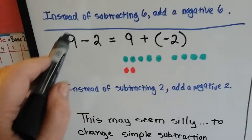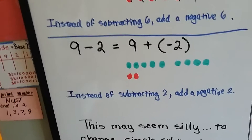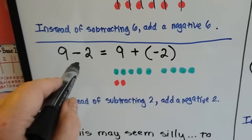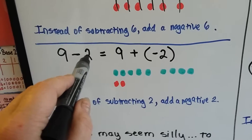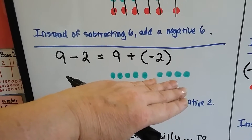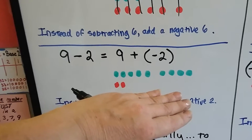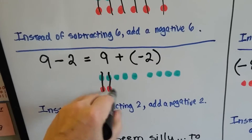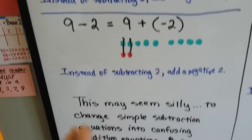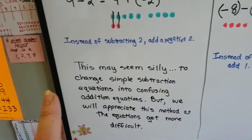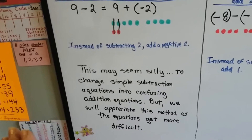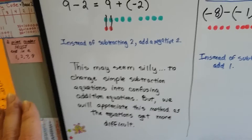One more: 9 minus 2. Let's turn it into an adding-the-opposite type problem. Turn the minus into a plus sign, and the positive 2 becomes a negative 2. So we've got 9 green chips, and we add 2 red negative ones. The zero pairs cancel each other out, and we're left with 7. I know it seems silly to change simple subtraction into addition equations, but we'll appreciate this method as the equations get more difficult.